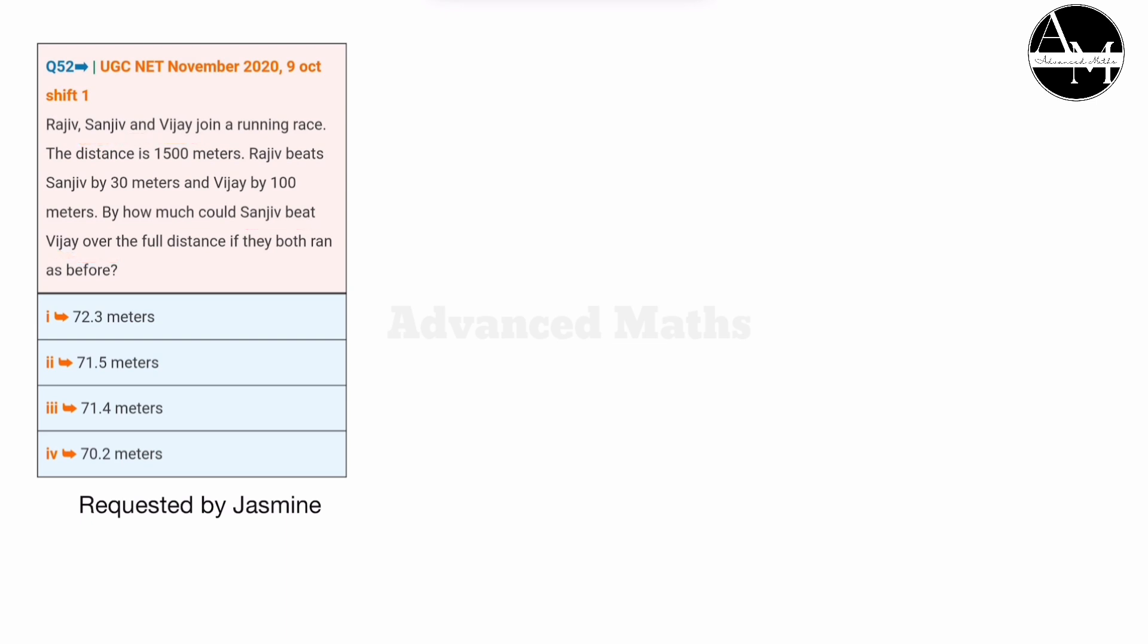The total distance is 1500 meters. We need to find the ratio between Rajiv and Sanjeev's distances. Looking at the ratio, we can determine how much distance one covers compared to the other.